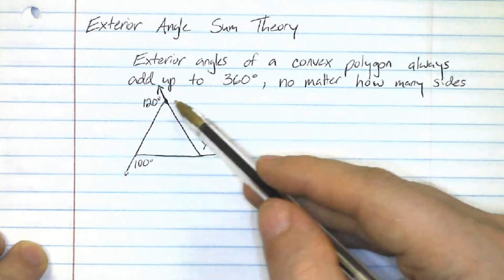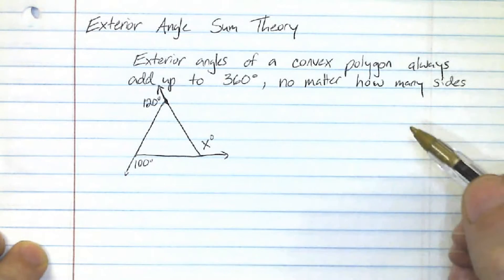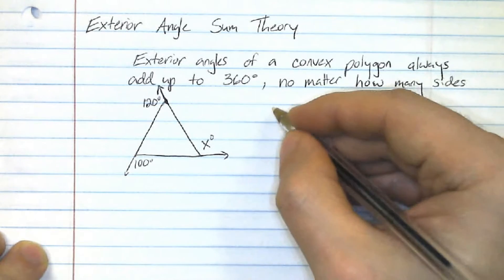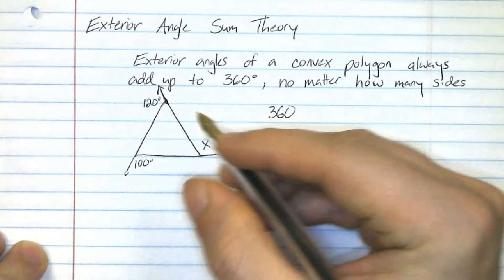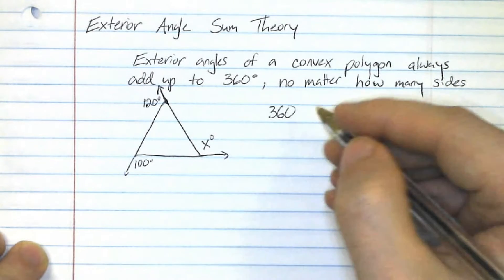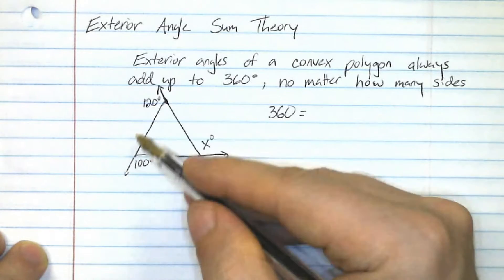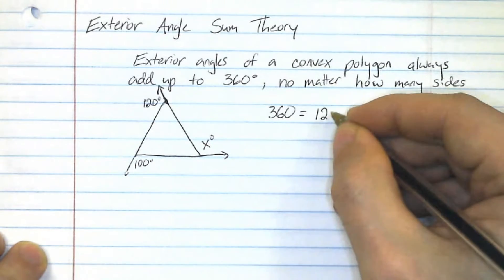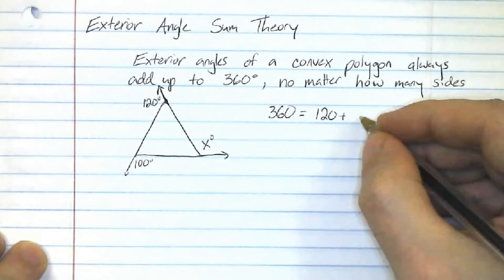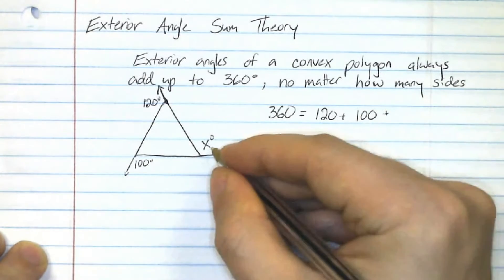So the more sides you have, the more like a spiral this kind of looks. So in order to do this, you know that all of these angles, no matter how many there are, they're always going to add up to 360. So you start out with 360 equals. And then just simply write your equation. In this case, we know it's going to be 120 plus 100 plus X.